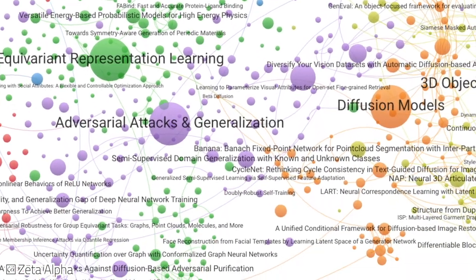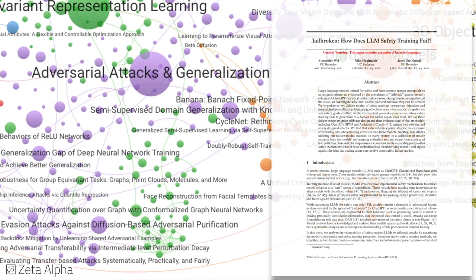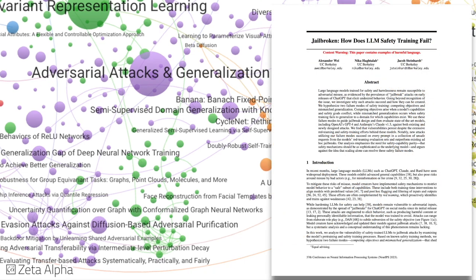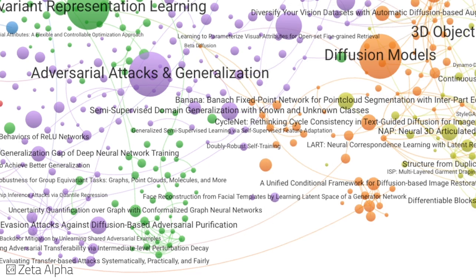Researchers from UC Berkeley demonstrate some of the shortcomings of current safety training methods by constructing jailbreaking attacks that expose failure modes in state-of-the-art language models due to competing objectives and mismatched generalization.